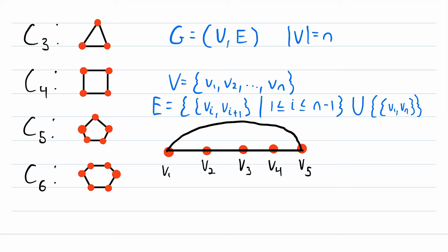So if a graph's vertices can be labeled v1 through vn, such that this is its edge set, and it has at least three vertices, then that graph is a cycle graph. And we saw that definition in action here. Once again, this part of the edge set gives us the edges that create a path, and then this last edge that we add to the edge set joins the first vertex and the last vertex of the path, thus turning it into a cycle graph.